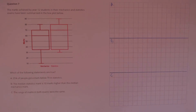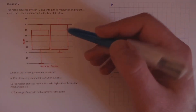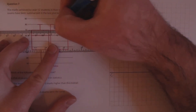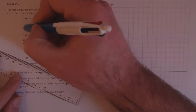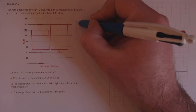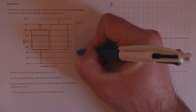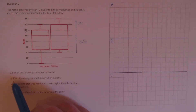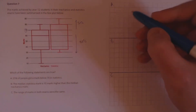Question 7. The marks achieved by year 12 students in their mechanics and statistics exams have been summarised in the box plot below. Which of the following statements are true? A: 25% of people got a mark below 70 in statistics. If we look at the statistics box-and-whisker plot, the mark of 70 corresponds to the median — the bar in the centre. The median splits the data in two: 50% above and 50% below. So the claim that 25% got a mark below is clearly incorrect.